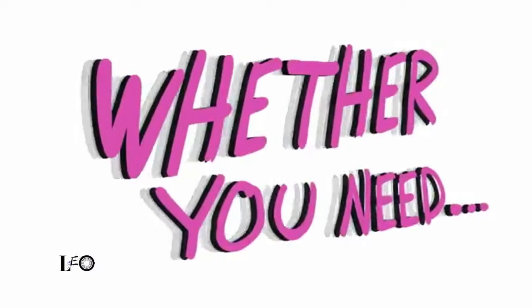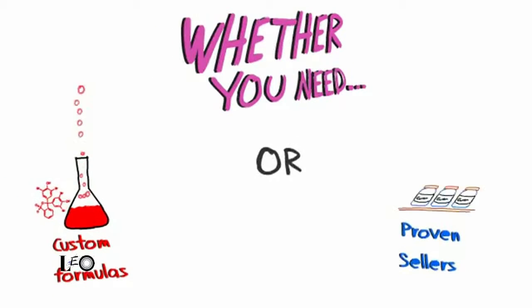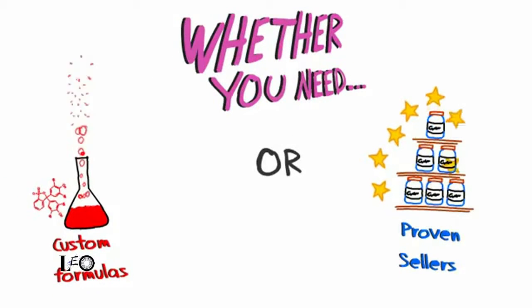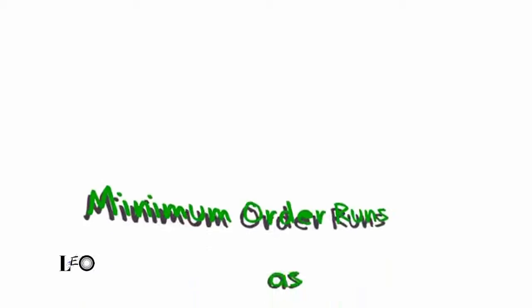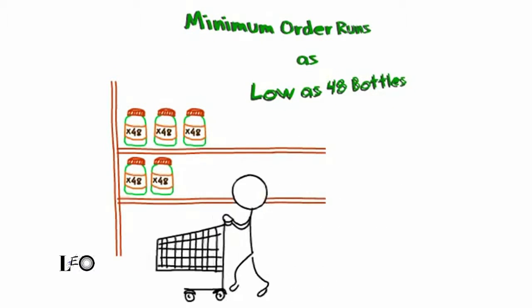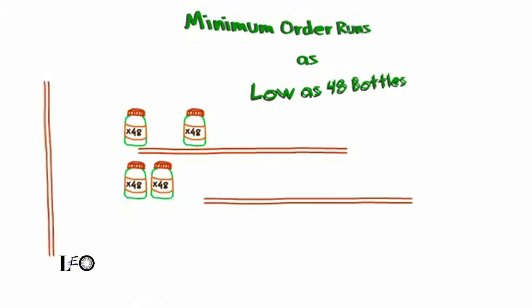Vitamix Labs. Whether you need custom formulas or proven sellers, never worry about overstocking on product you can't sell. With minimum order runs as low as 48 bottles, see what works for your business and invest in more when you're ready.